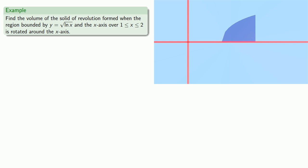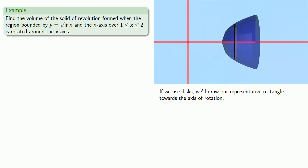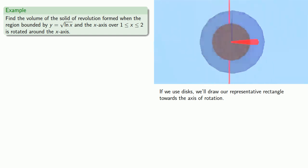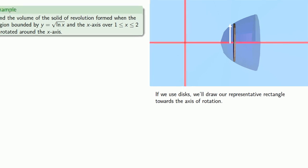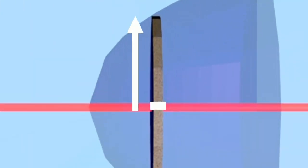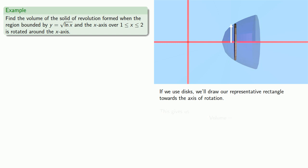Now let's try to find the volume using disks. We'll draw a representative rectangle towards the axis of rotation, which is the x-axis, and then revolve everything around the x-axis. Let's take a look at those disks. The radius of the disk will be our y-value. The height will be a tiny portion of the x-axis. So the volume will be pi y squared dx, which will sum from x equals 1 to x equals 2.